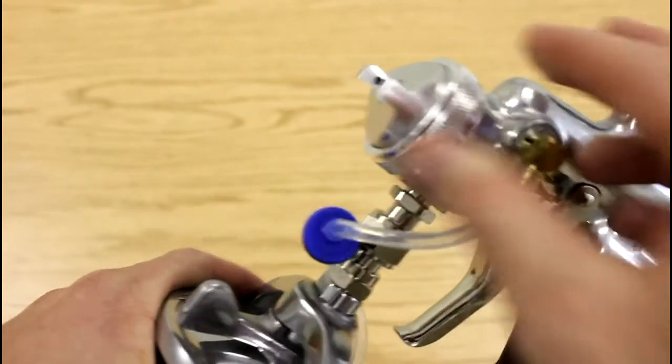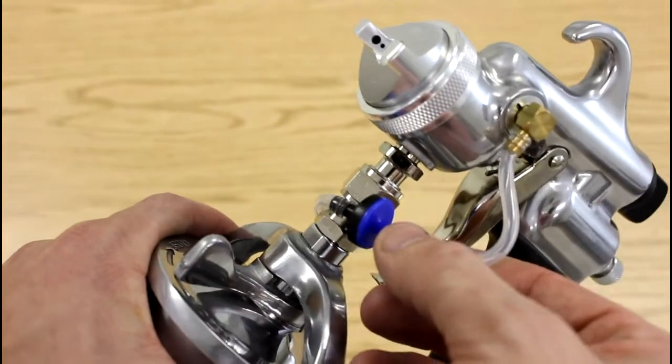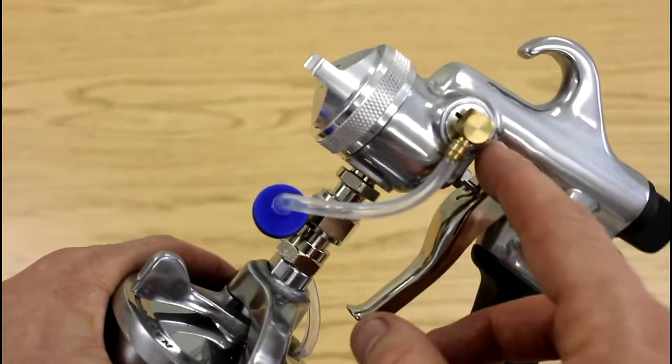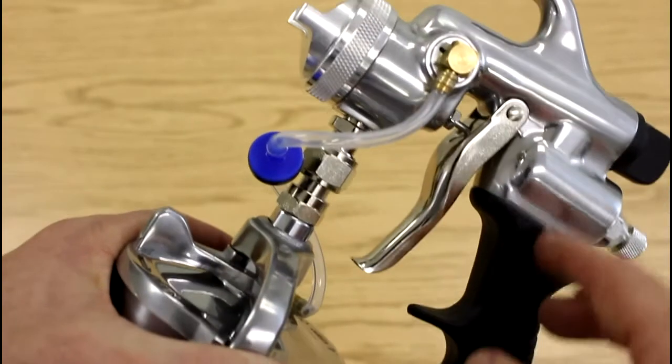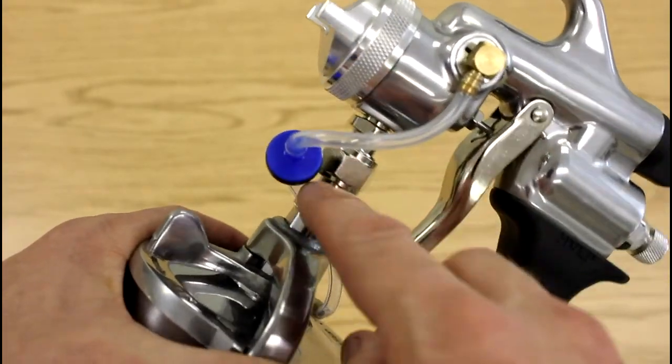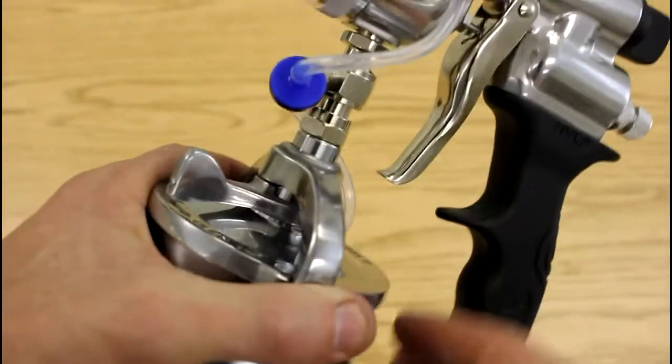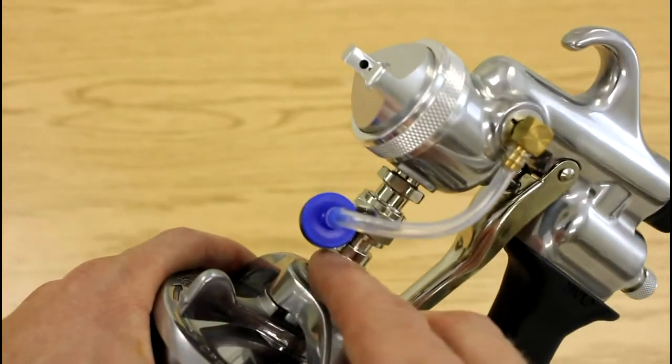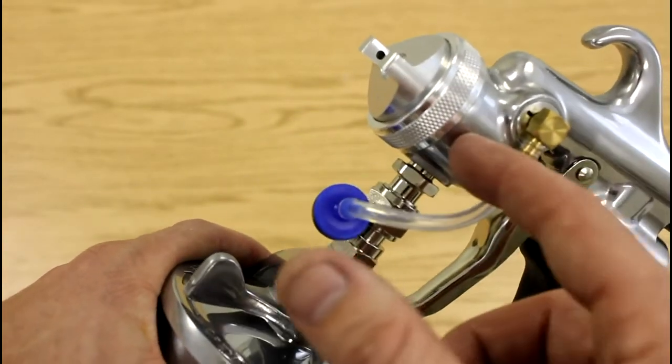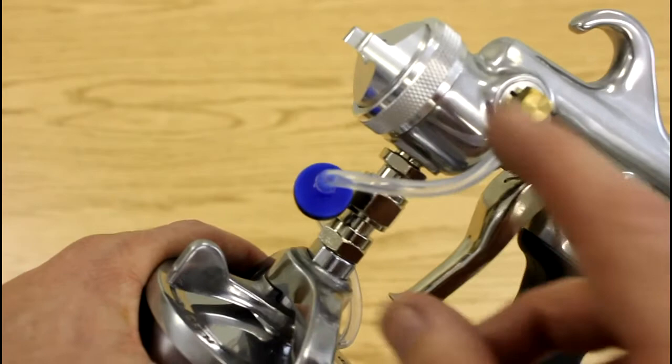Moving on behind that you'll see this clear tube with a valve in it. What this does is this allows some of the air from coming from your turbine flows through this one way valve and into the cup here. It pressurizes up the cup and helps push the paint up and then out to the gun.